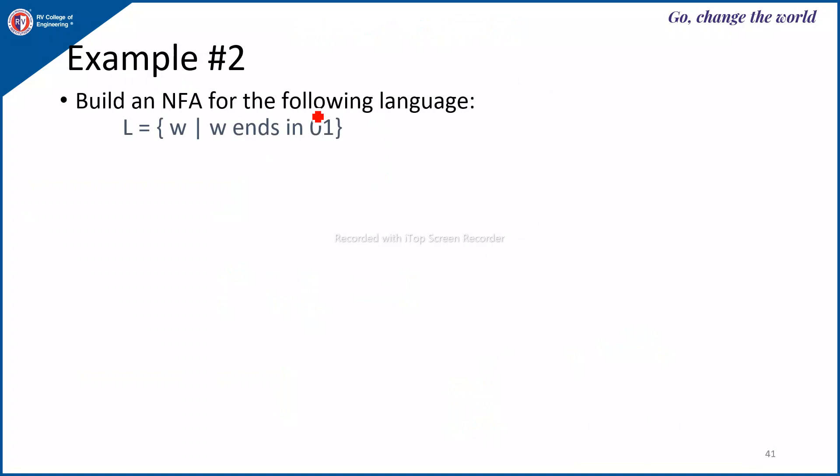Second example, build an NFA for the following language where L equals to W, W ends in 01. For the minimum string, first construct the automata. The minimum string is 01. On 0 from Q0 goes to the state Q1. For Q1, on 1 to the final state which is Q2. This is my final state. Whenever it ends with, so for the start state, you put a self loop to accept all the symbols other than the last two symbols. It could be 0s or 1s for the start state. This is the NFA for the problem. If it was starts with 01, then this self loop will be on Q2.